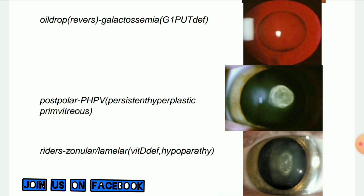Next image: Rider's zonular lamellar cataract. It occurs due to vitamin D deficiency or is seen in hypoparathyroidism. It is the most common type — bilateral opacification of specific layers or zones. On slit lamp examination, we see a layer of opacification involving the fetal nucleus, with a surrounding clear center, which is itself surrounded by a layer of clear cortex. Front view shows a disc-shaped configuration and arcuate opacities straddling the equator.